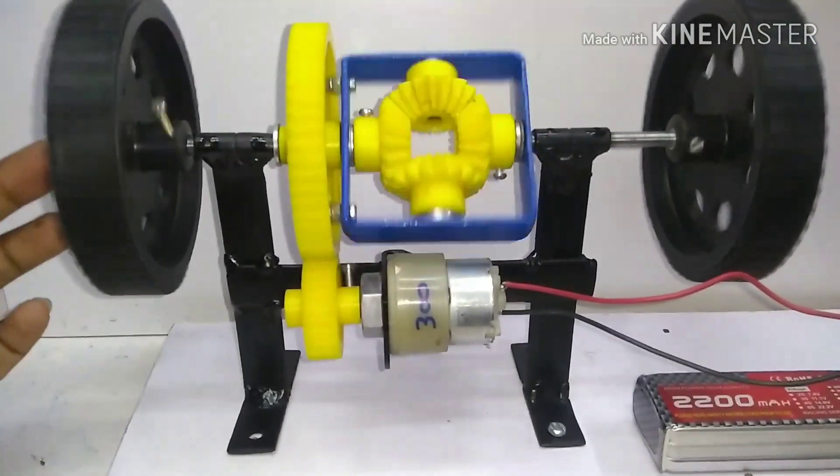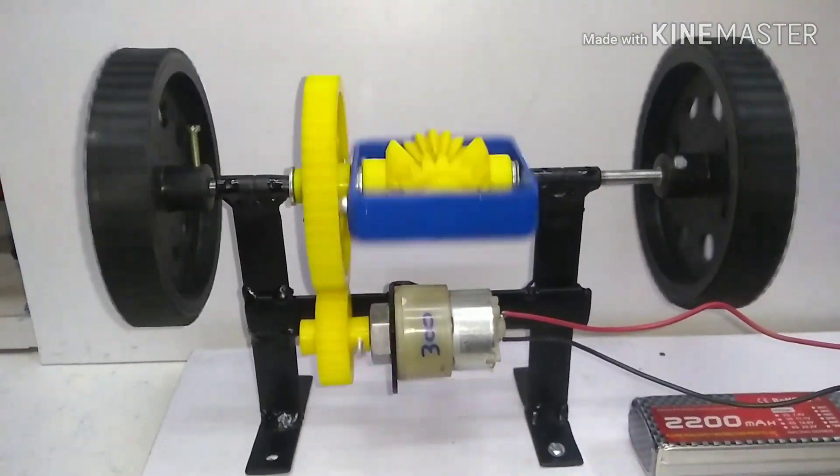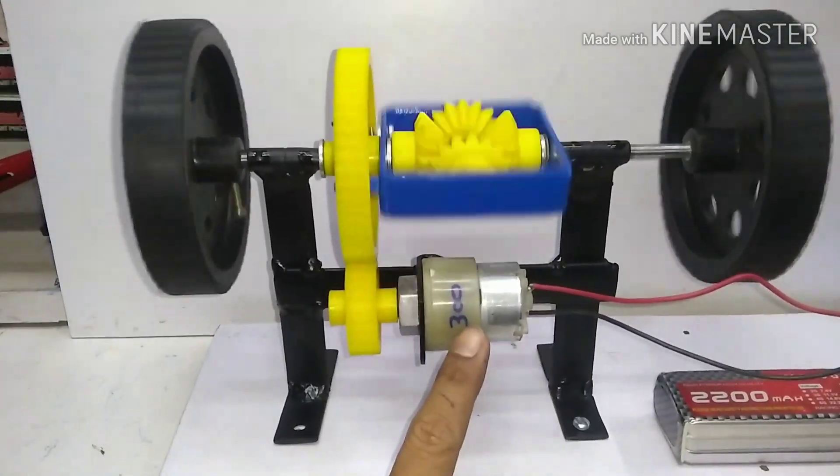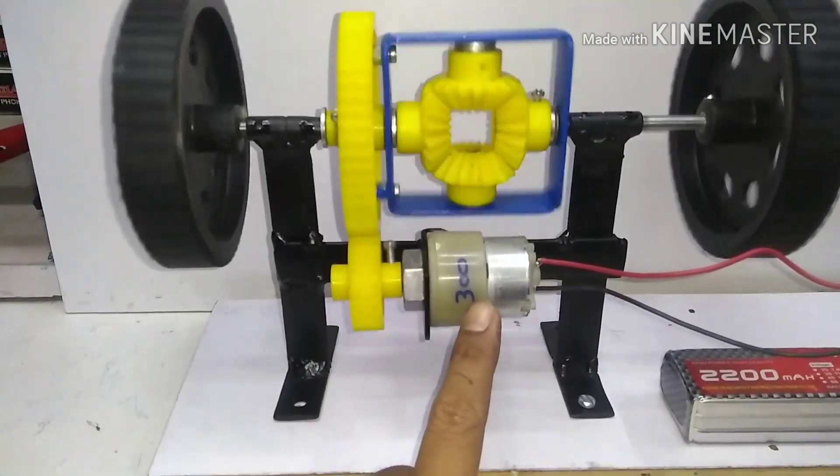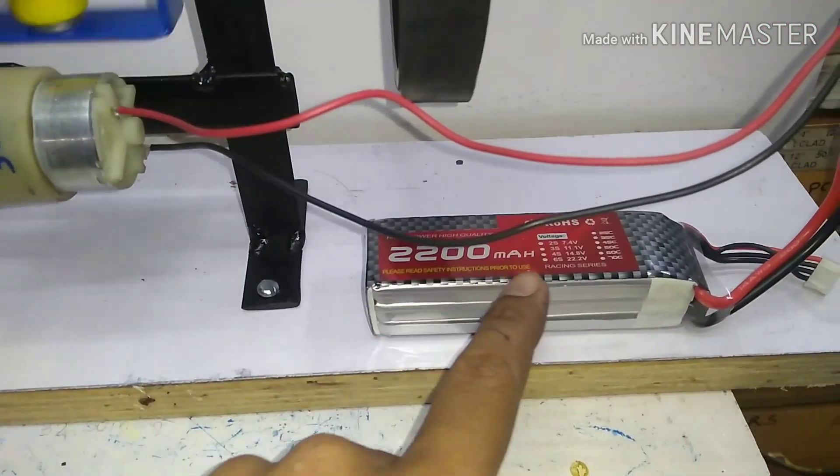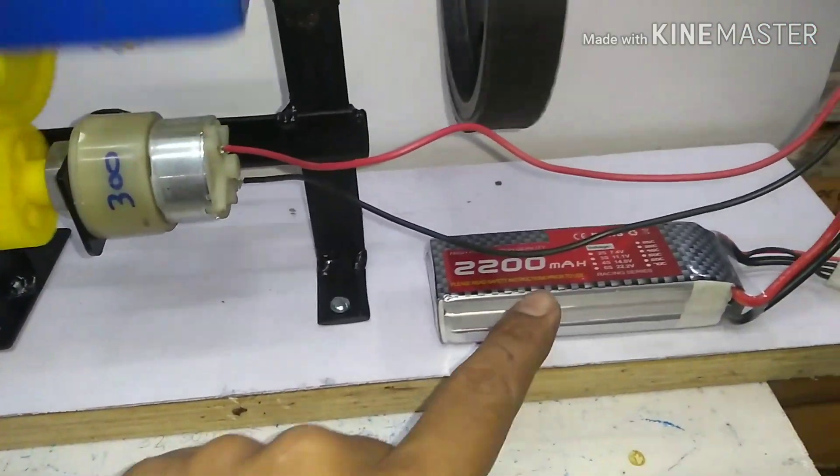So the advantage of this system is you can consider this motor as an engine. This motor has an RPM of 300 at 12 volts. I'm running it on a 12-volt lipo battery, a three-cell lipo.